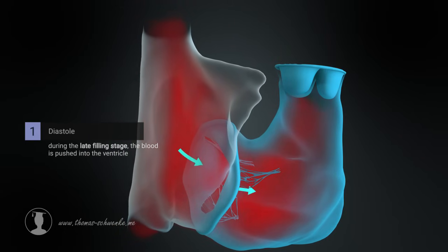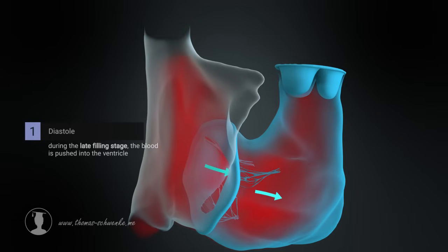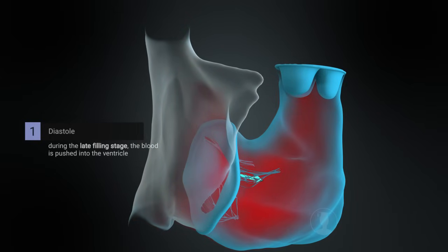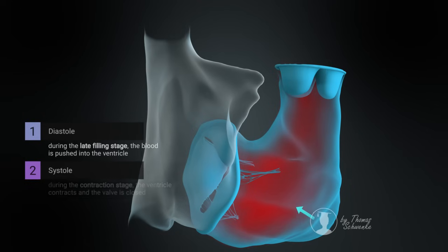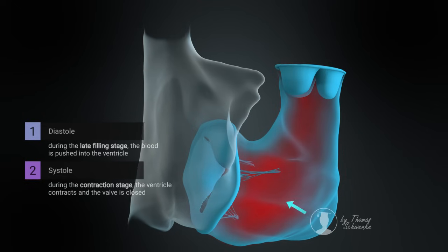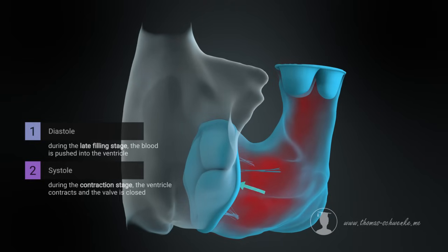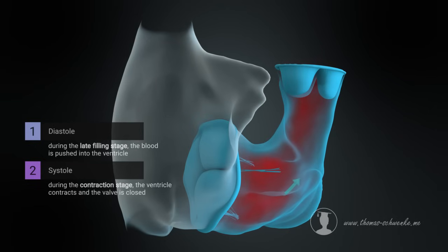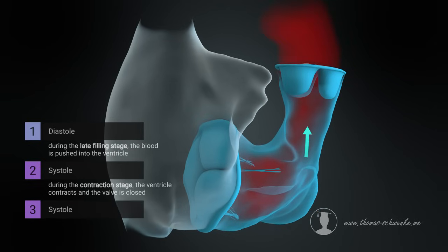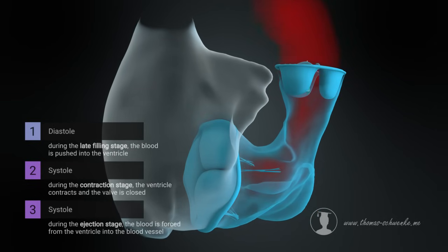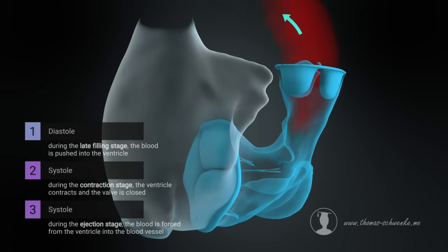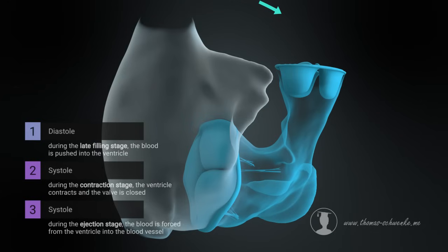The cardiac cycle is generally divided into a diastole and a systole. Diastole refers to the relaxed ventricle filled with blood. Systole, on the other hand, refers to the contracted ventricle which ejects the blood. Systole is divided into the contraction stage and the ejection stage. Diastole is divided into an early filling stage and a late filling stage.